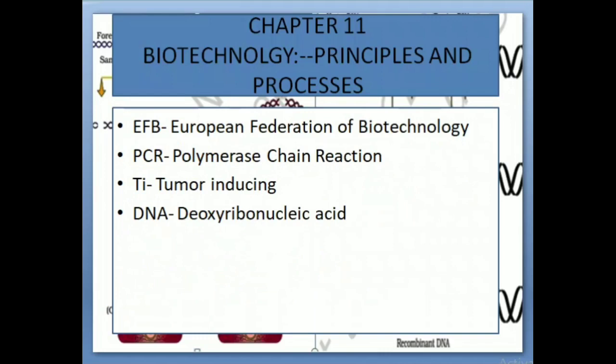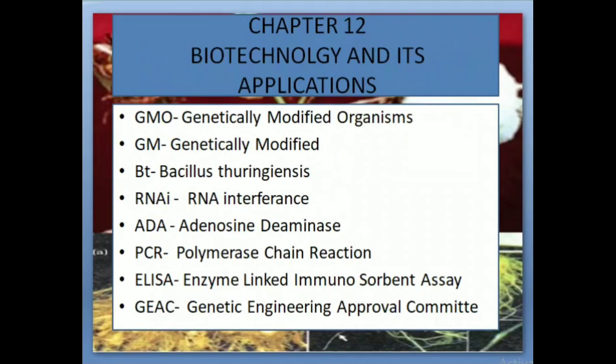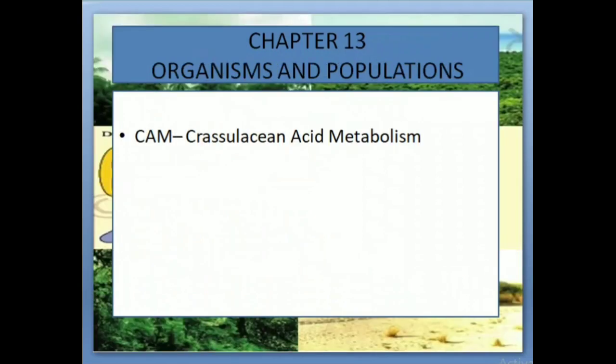Chapter 11: Biotechnology Principles and Processes. EFB: European Federation of Biotechnology. PCR: Polymerase Chain Reaction. Ti: Tumor Inducing. DNA: Deoxyribonucleic Acid. Chapter 12: Biotechnology and Its Applications. GMO: Genetically Modified Organisms. GM: Genetically Modified. Bt: Bacillus Thuringiensis. RNAi: RNA Interference. ADA: Adenosine Deaminase. PCR: Polymerase Chain Reaction. ELISA: Enzyme-Linked Immunosorbent Assay. GEAC: Genetic Engineering Approval Committee.